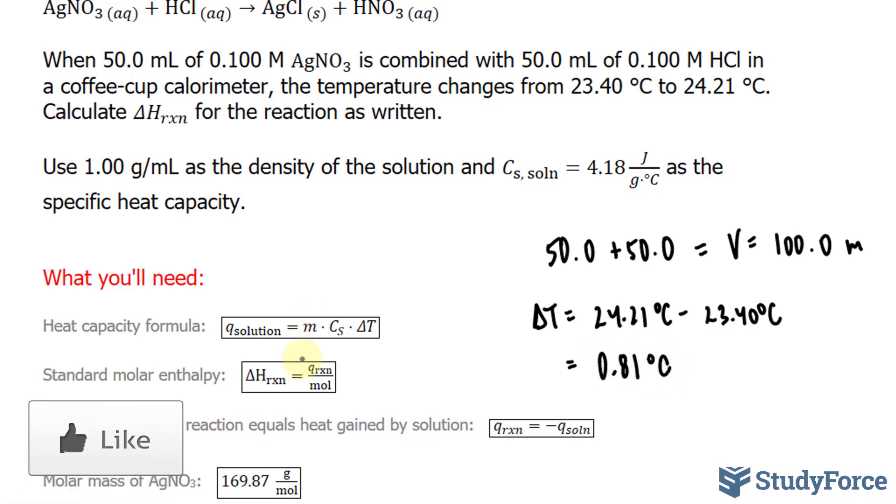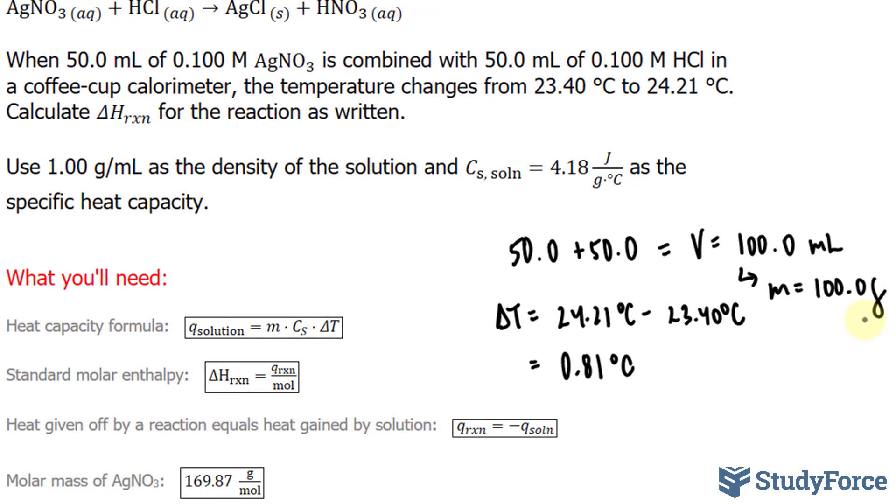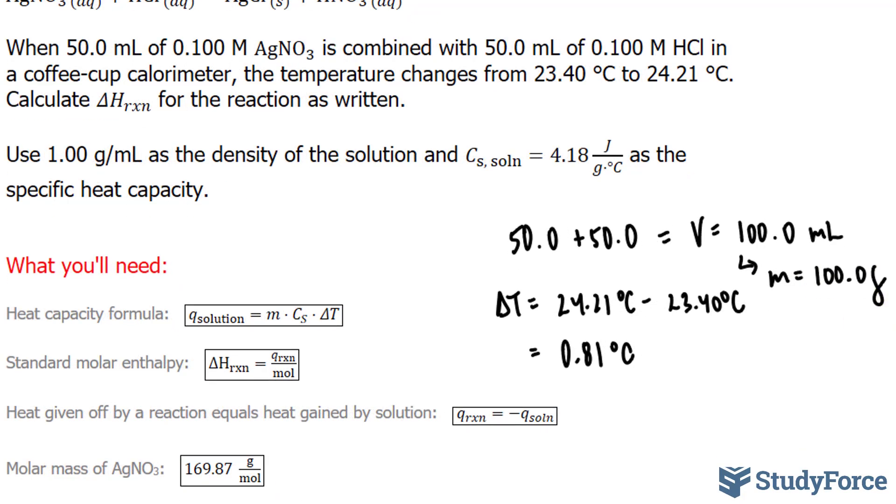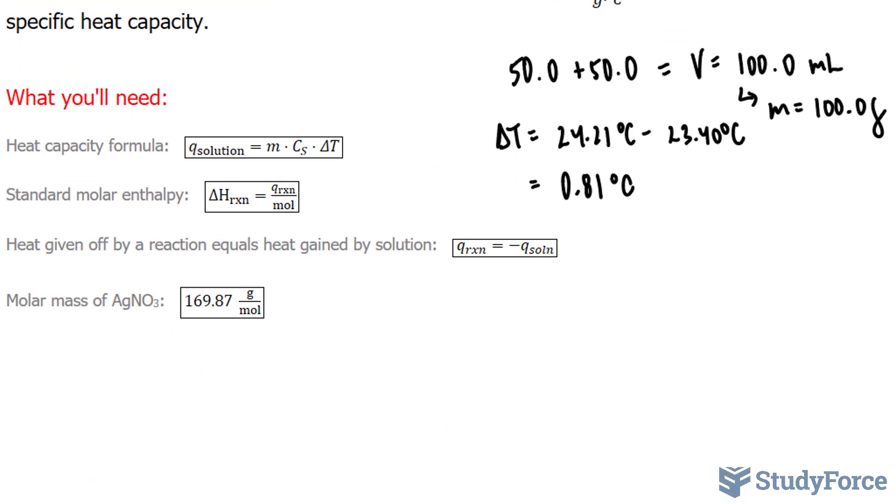We can find the mass by taking 100.0 milliliters and using the density. It's a 1 to 1 ratio: 1 gram equals 1 milliliter, so the mass is 100.0 grams. Let's find the amount of heat absorbed by the solution. Keep in mind the solution is absorbing heat, so we're expecting a positive Q value.